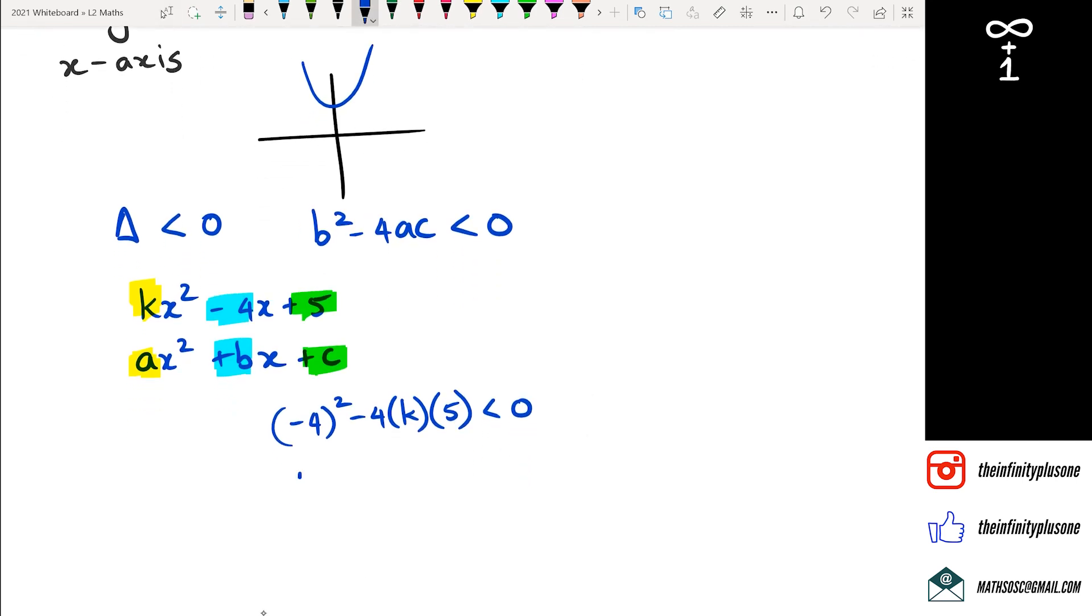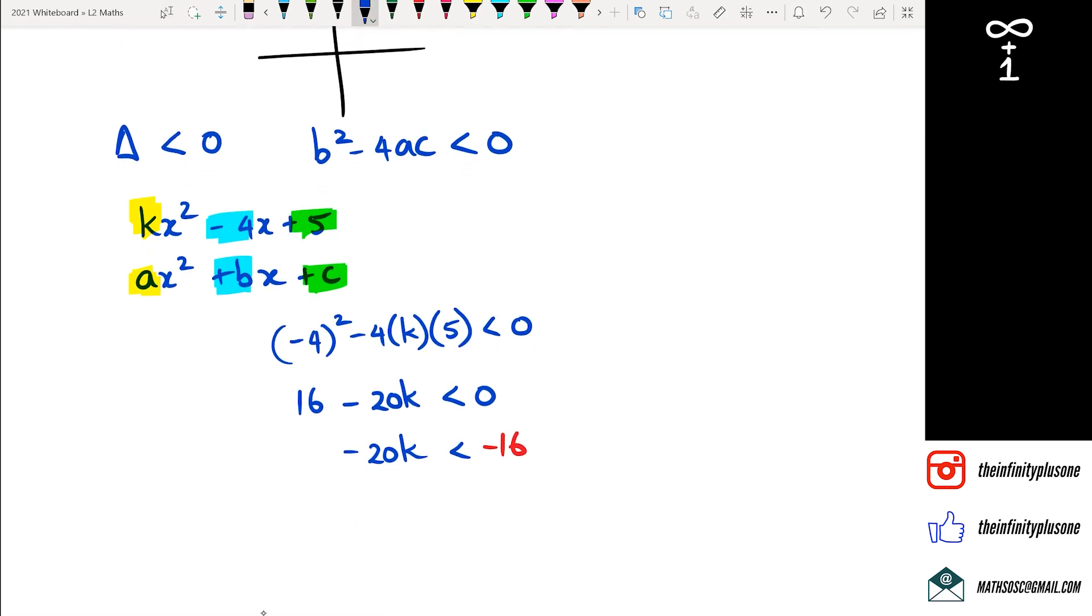So expanding the brackets, I'm going to get 16 minus 20k is less than 0. And of course, I need to get rid of the 16 to the other side, which will make it negative 16. And now I've got to get rid of the negative 20 to the other side. And if you guys remember from level one, when we were working with inequalities, and if we divide by a negative number, we need to actually change the sign.